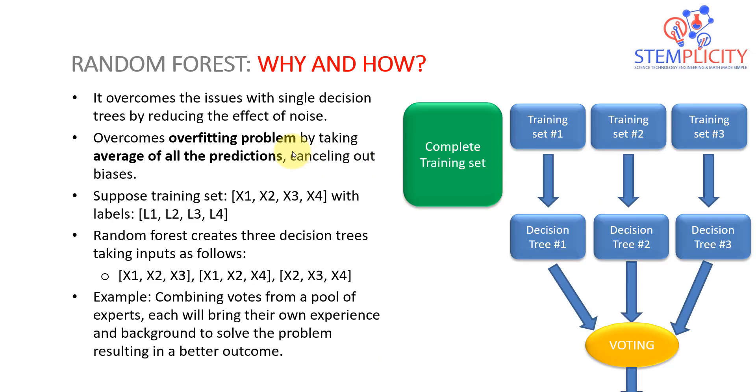Let's take a look at more details. So let's assume that we have here our complete training data set. We have a data set that contains these data points X1, X2, X3, X4, with labels of L1, L2, L3, L4. And what random forest technique we're going to do, it will simply create three decision trees. We're going to train three decision trees, decision tree 1, decision tree 2, decision tree 3, using three different training sets.